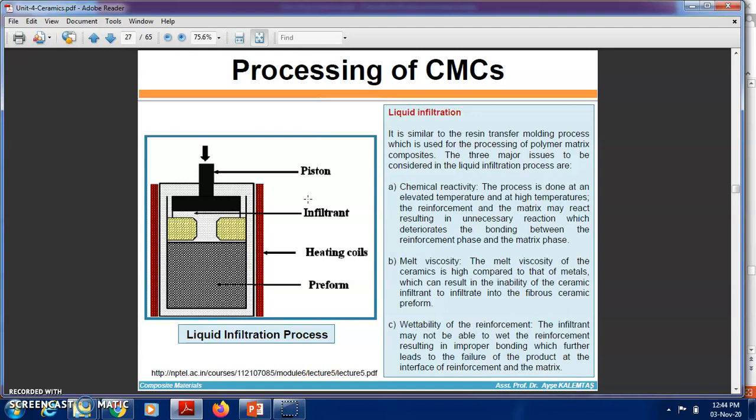In chemical reactivity, the process is done at elevated temperature. At high temperature, the reinforcement and matrix may react, resulting in unnecessary reactions which deteriorate the bonding between reinforcement phase and matrix phase. In melt viscosity, the melt viscosity of ceramics is high compared to that of metals, which can result in the inability of the molten ceramics to infiltrate into the fibrous ceramic preform. In wettability, the reinforcement may not be properly wetted by the infiltrate, resulting in improper bonding which further leads to failure of the product at the interface of reinforcement and matrix.